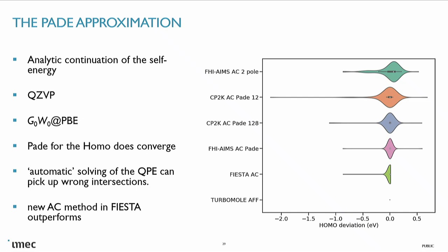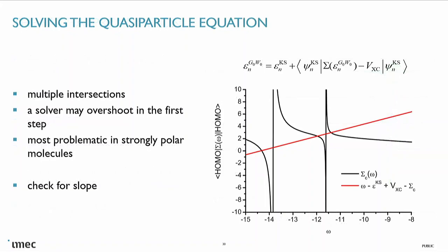What about the Padé approximation? If you just use a 12-pole Padé approximation for the analytic continuation, the box plot starts to increase — a significant number of molecules start to not agree super well anymore. If you take a two-pole approximation for molecules, the distribution really gets off and we also see a sliding off of the center. Part of the outliers come from your Dyson equation solver or quasi-particle equation solver picking up the wrong solution. We usually solve the quasi-particle equation with Kohn-Sham orbital sandwiching of the self-energy. The self-energy is evaluated at the quasi-particle energy, so this needs to be solved self-consistently. If the intersection is very close to one of those poles, a solver can easily hop to the other side. An important check: if the slope at the solution you found is larger than one half, you're usually in a dangerous region.